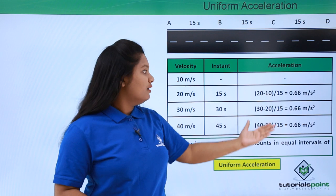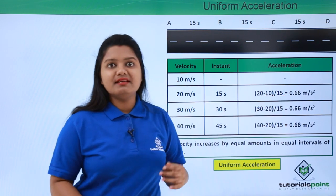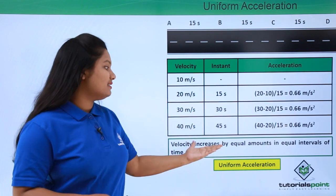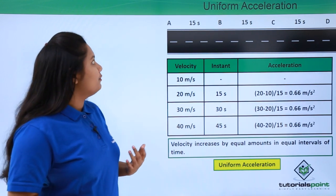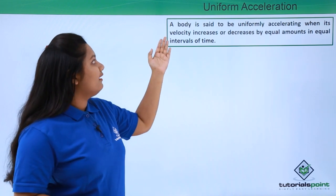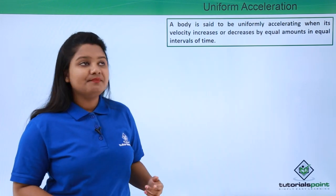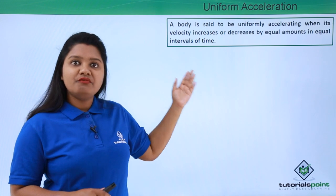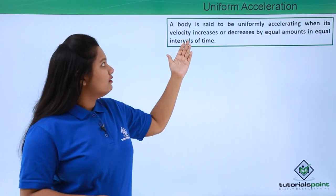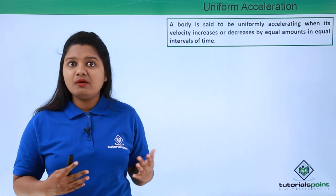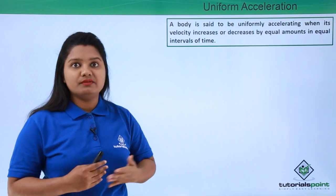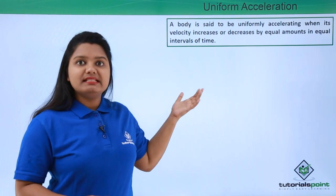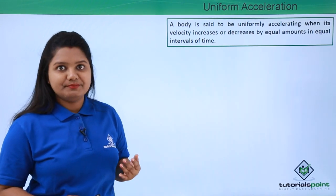When we calculate the acceleration in all these cases, we find the acceleration to be the same: 0.66 meters per second squared. Thus this motion of the car is said to be uniformly accelerated. We define uniform acceleration as: a body is said to be uniformly accelerating when its velocity increases or decreases by equal amounts in equal intervals of time.